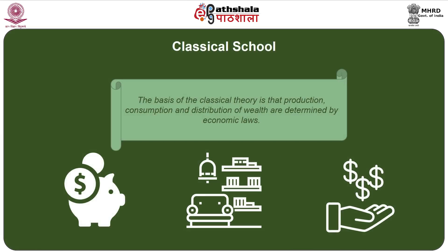The basis of the Classical theory is that production, consumption, and distribution of wealth are determined by economic laws. In any society, wealth involves three vital components: production of wealth, consumption of wealth, and distribution of wealth. The whole basis of Classical theory rested on the assumption that these three components are determined by economic laws.